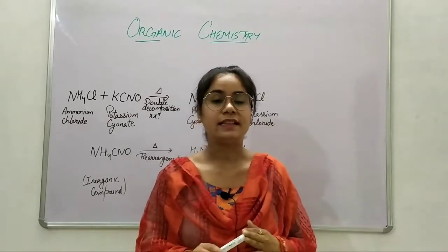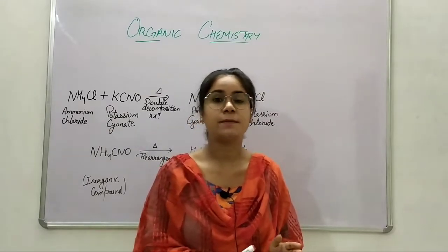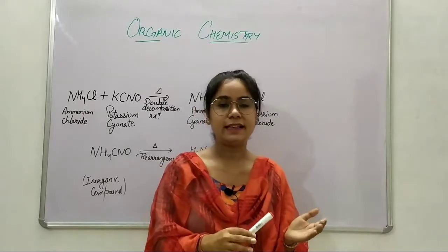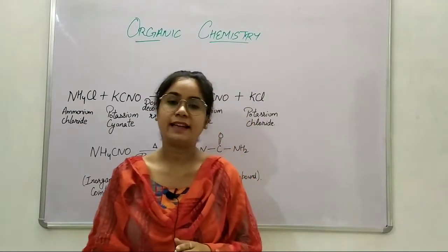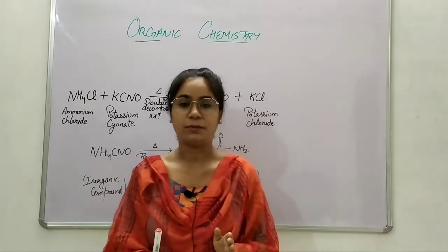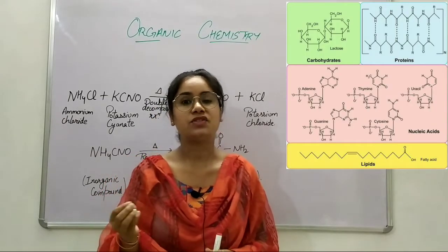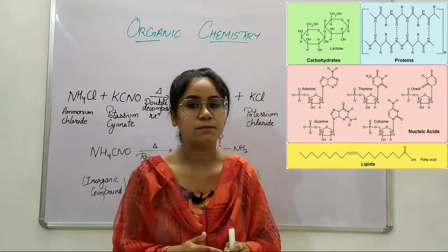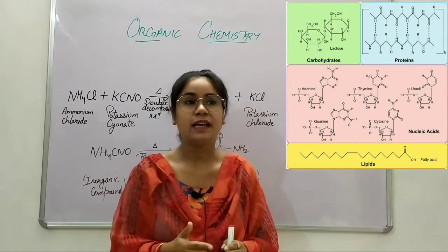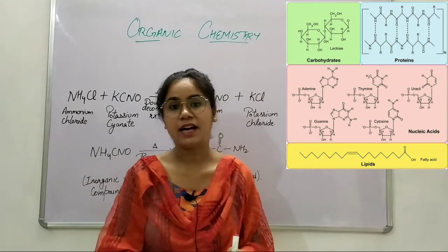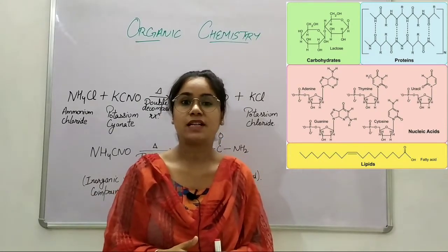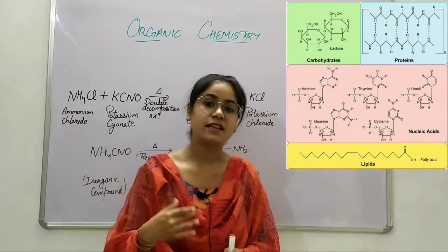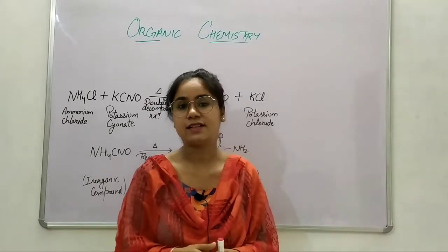Dear students, the definition and meaning of organic chemistry has not been the same from previous years or previous centuries. In the 18th century, it was considered that organic chemistry is all related to living beings — that means the products which are directly or indirectly made by living organisms are considered as organic compounds. For example, urea, fats, carbohydrates, proteins, vitamins, minerals — all these kinds of things were considered organic compounds, and the study of these compounds was considered as organic chemistry.